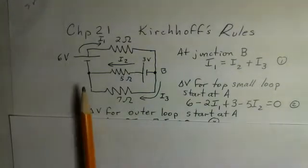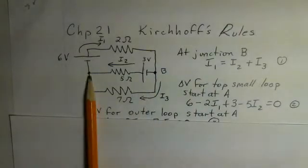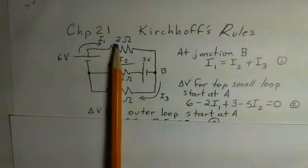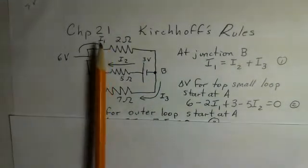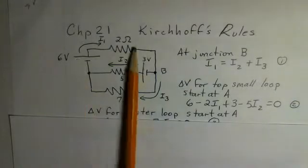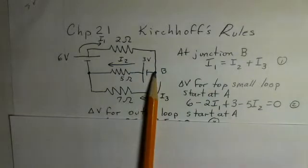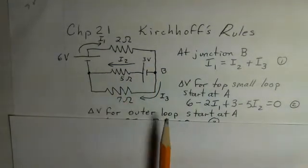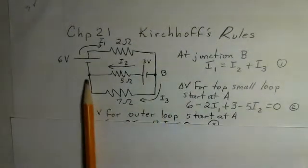Your next step would be to locate the nodes and from one node to another node label a current. This is just a guess for the direction of the current. We have I1 as my guess moving around the branch this way. I2 I'm guessing starts over here at B, ends over here at this node, and I3 I'm also starting at B and ending at this node.